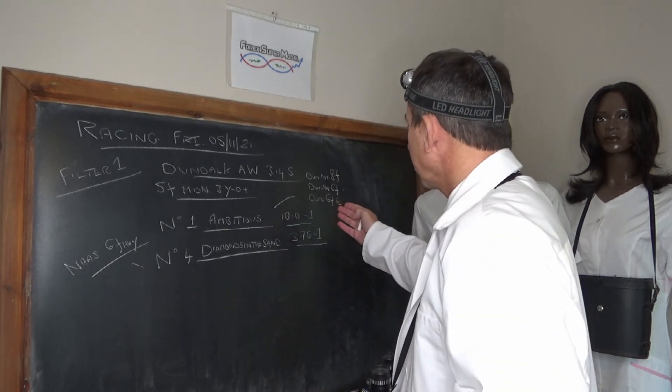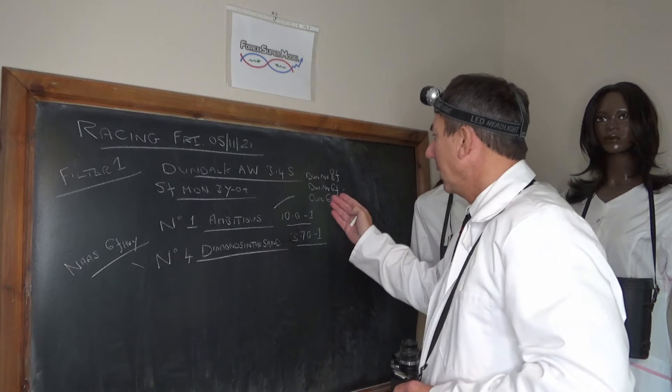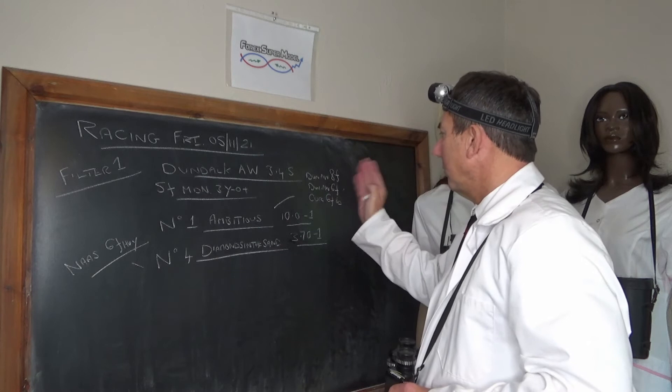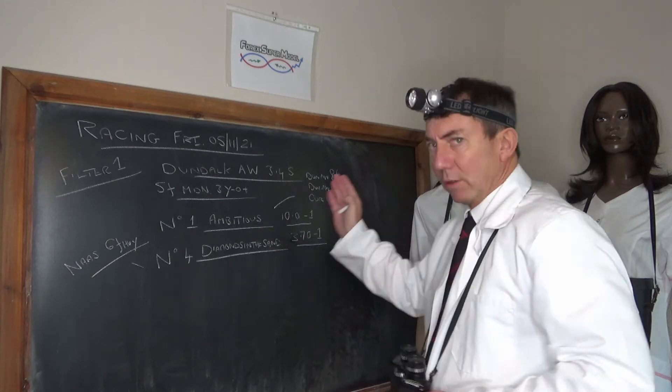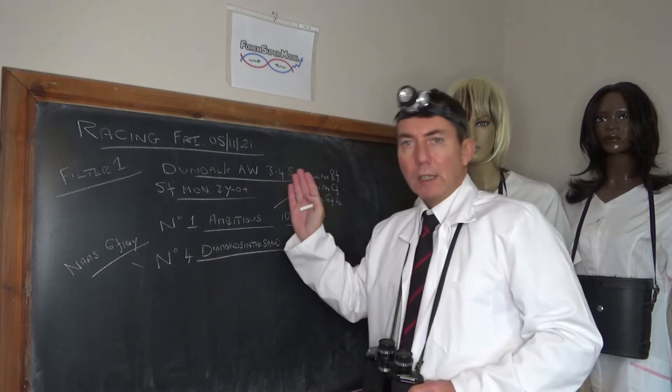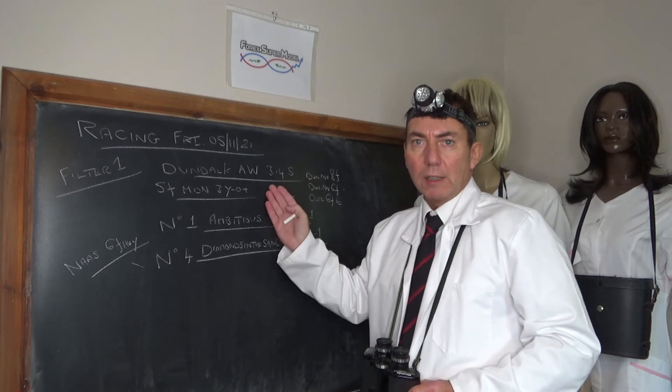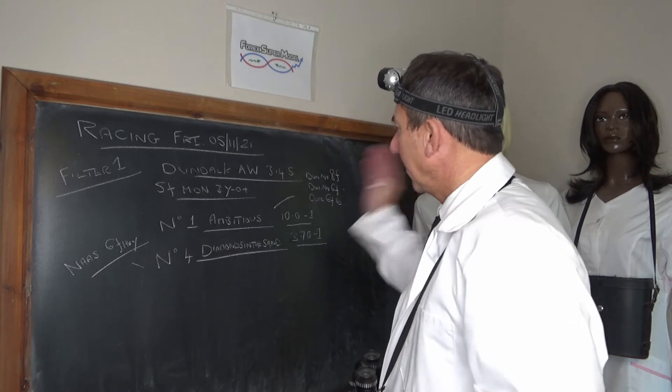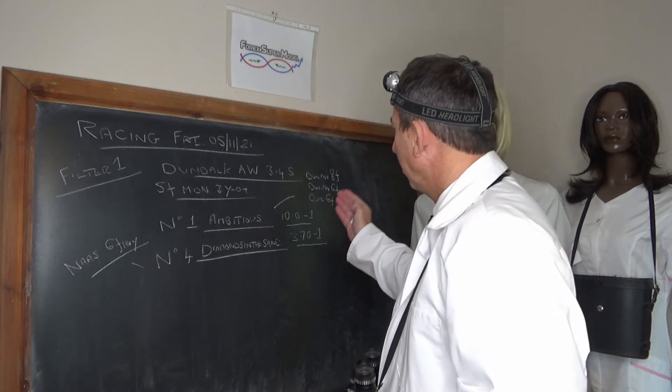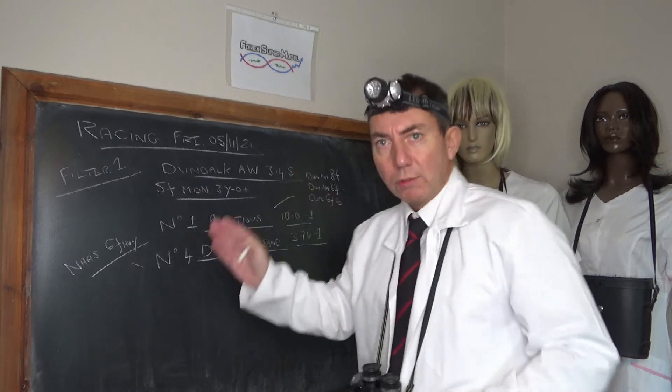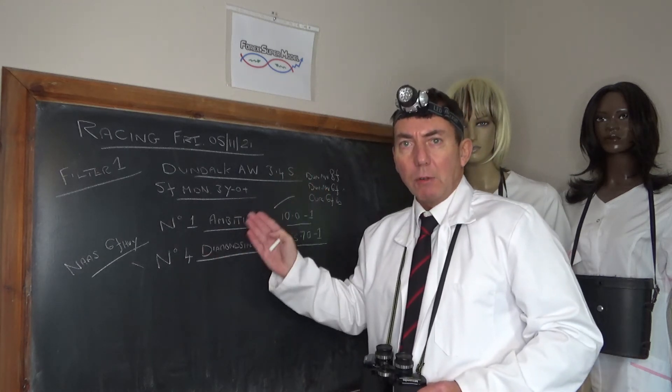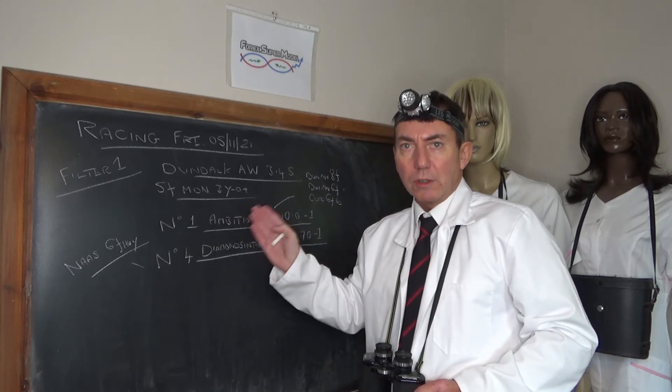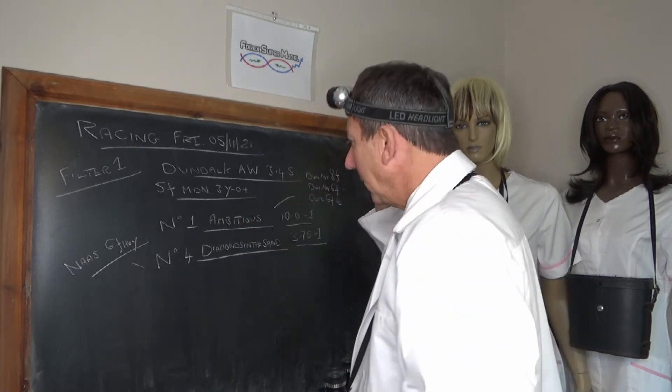The first one was at the Curragh at six furlongs in good going. The next one was Dundalk all-weather six furlongs, and the final run was at Dundalk on the all-weather eight furlongs. Now this horse is pretty sharp, it's a decent horse, and presumably they're going to hit the go button today. Five furlongs Dundalk on the all-weather will suit it. It's been a little bit slowly away on a couple occasions, but Dundalk is a fast track.